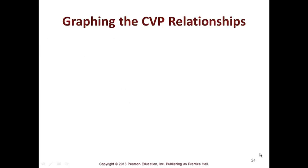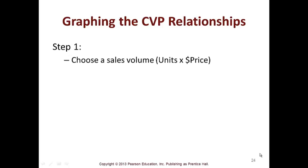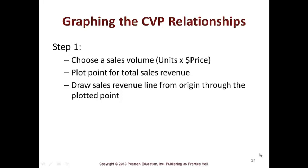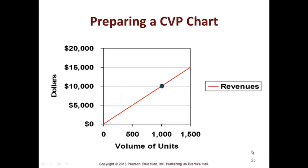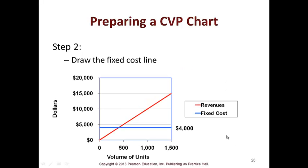Graphing the CVP relationship — graphs are very dynamic to show managers. You choose a sales volume, plot the point, draw the sales revenue line, showing dollars and units plotted together. Then you prepare a CVP chart and draw the fixed cost line. At the point where revenue crosses over that fixed cost line, you're making a profit. This is a visual that's very helpful to managers.